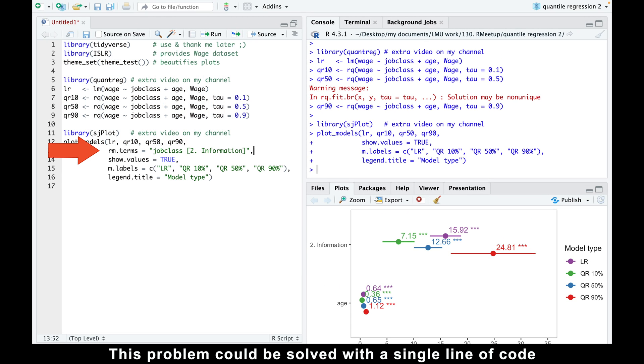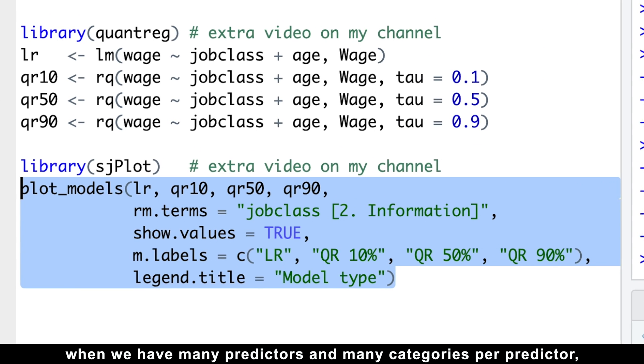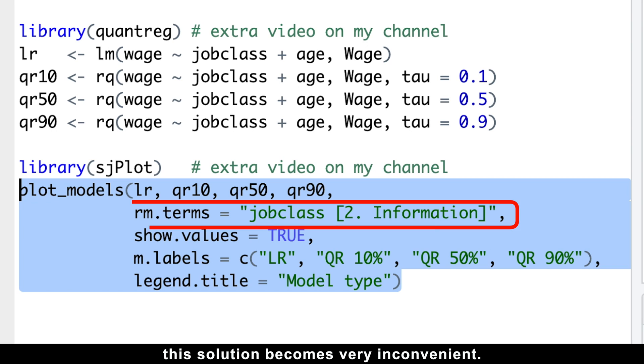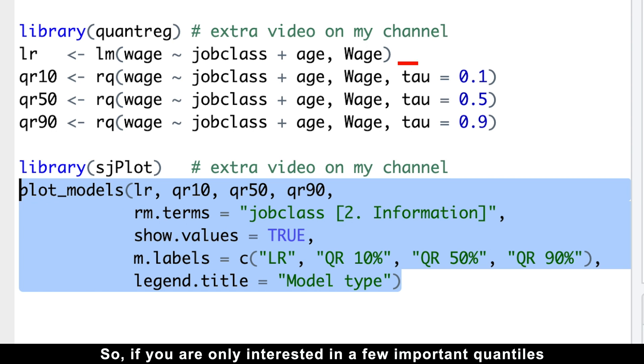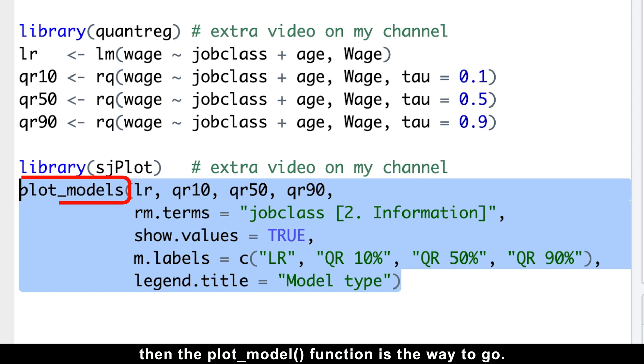This problem could be solved with a single line of code by using the remove terms argument. However, when we have many predictors and many categories per predictor, this solution becomes very inconvenient. So, if you are only interested in a few important quantiles and have models with a low number of predictors, then the plot model function is the way to go.